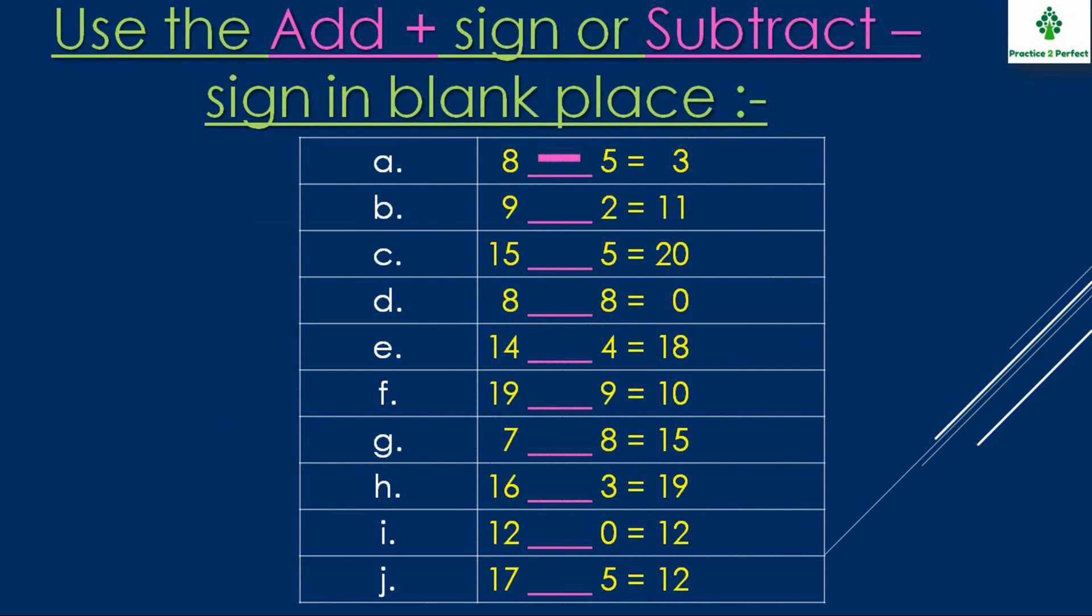In this question you have to identify which sign, plus or minus, will go in the blank place. In the first example, 8 minus 5 is equal to 3. If I put plus sign the result will be 8 plus 5 equal to 13. But if I put the minus sign then the result is 3. So minus is the correct sign which will go in the blank place.